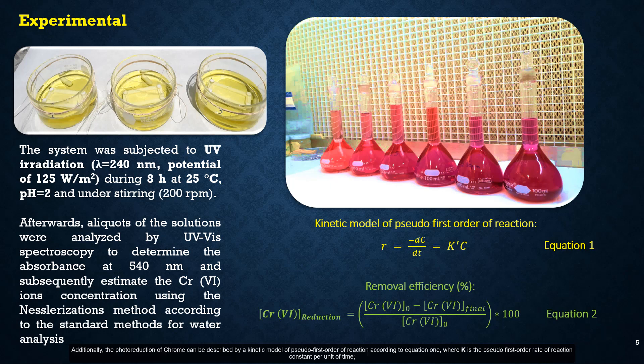Additionally, the photoreduction of chrome can be described by a kinetic model of pseudo-first order of reaction according to equation 1, where K is the pseudo-first order rate of reaction constant per unit of time, C is the concentration of chrome in aqueous solution, T is the reaction time, and R is the reaction rate. In addition, the efficiency of the photocatalytic reduction of chrome was quantified using equation 2.